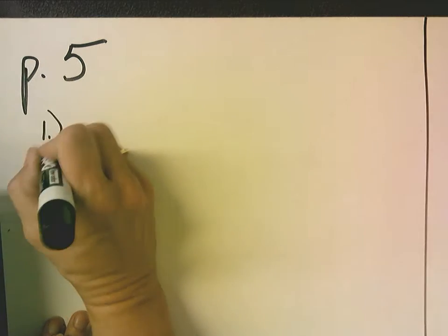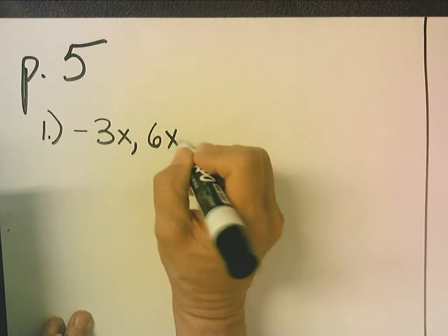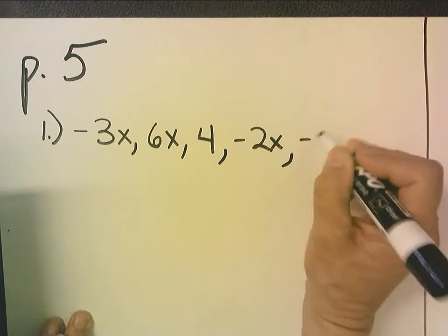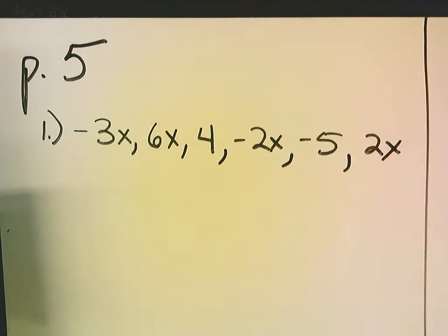The first thing we want to do is always list our terms and use commas to separate them. We do this because then there's no confusion about whether we're adding or subtracting positive and negative. We know we're combining these. Combining means adding, so we're adding positive and negative terms.